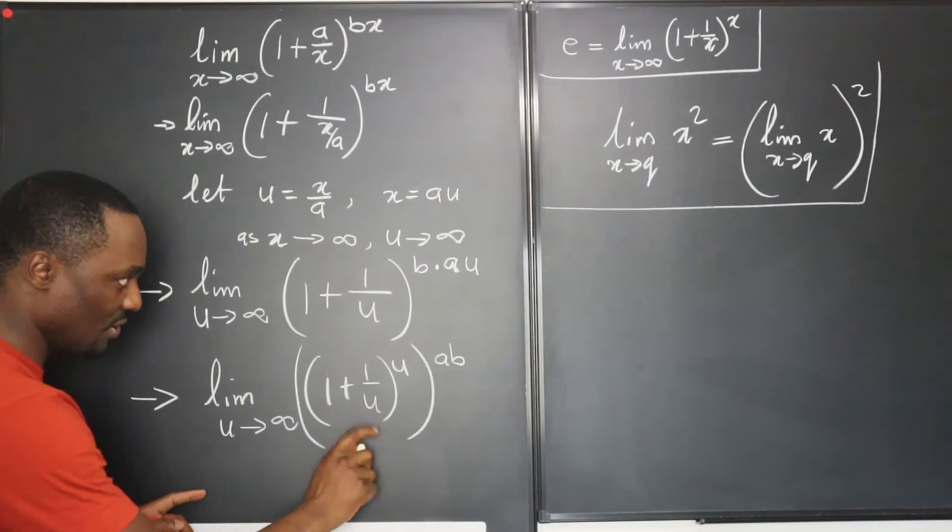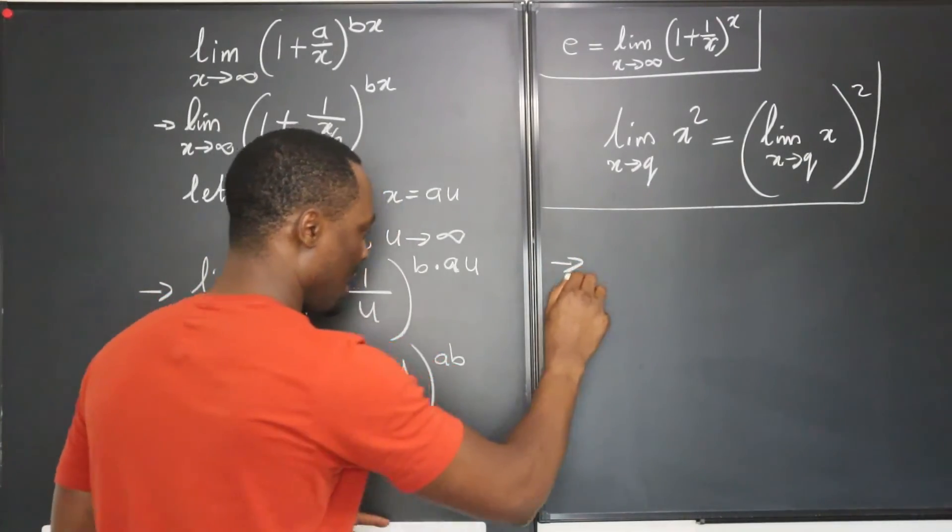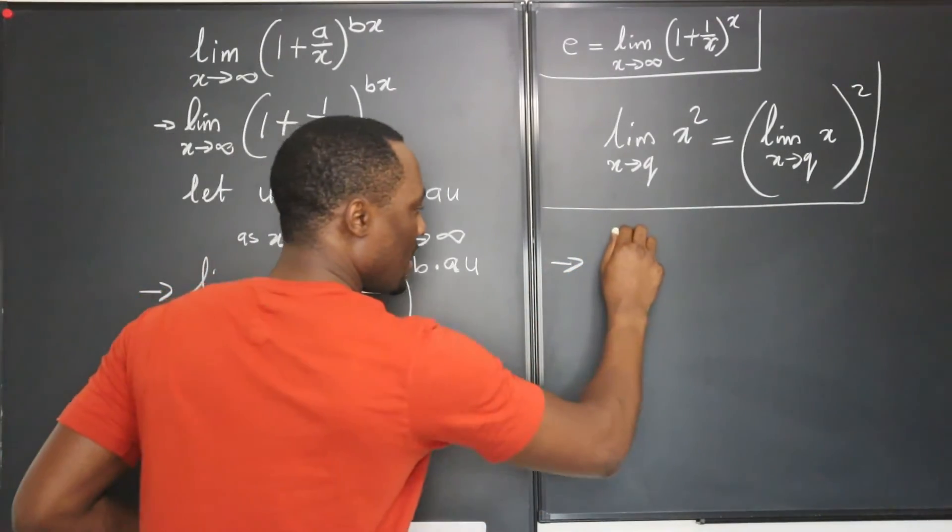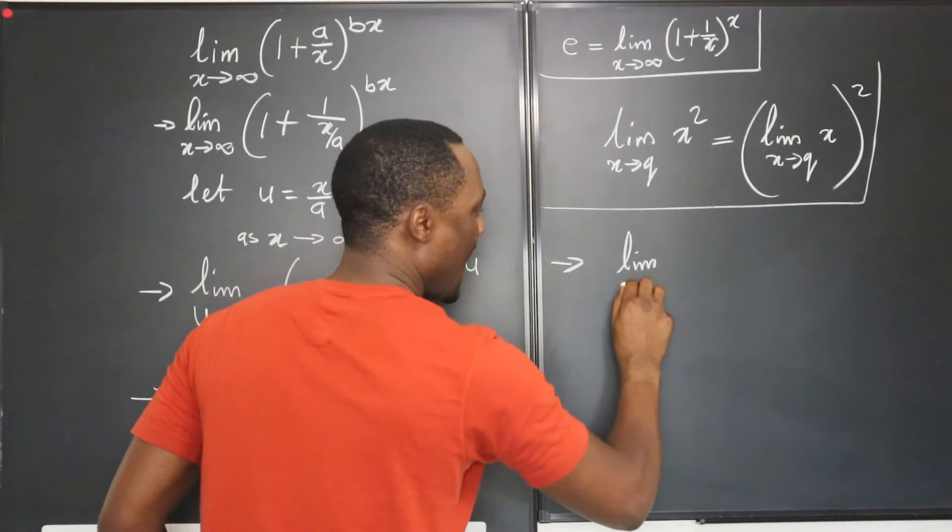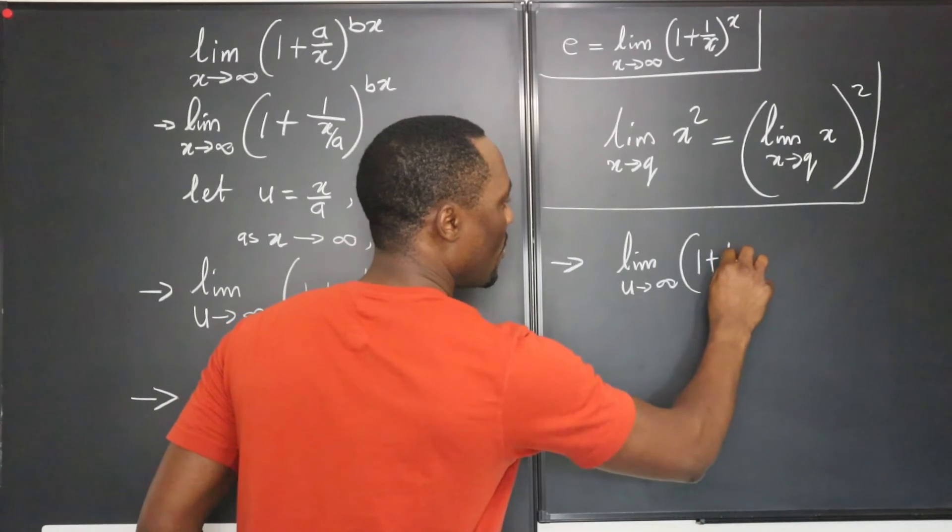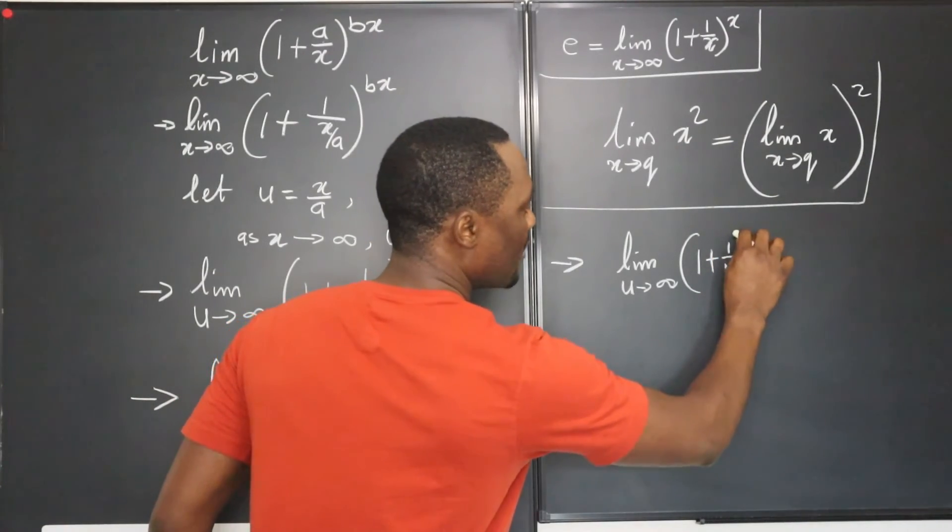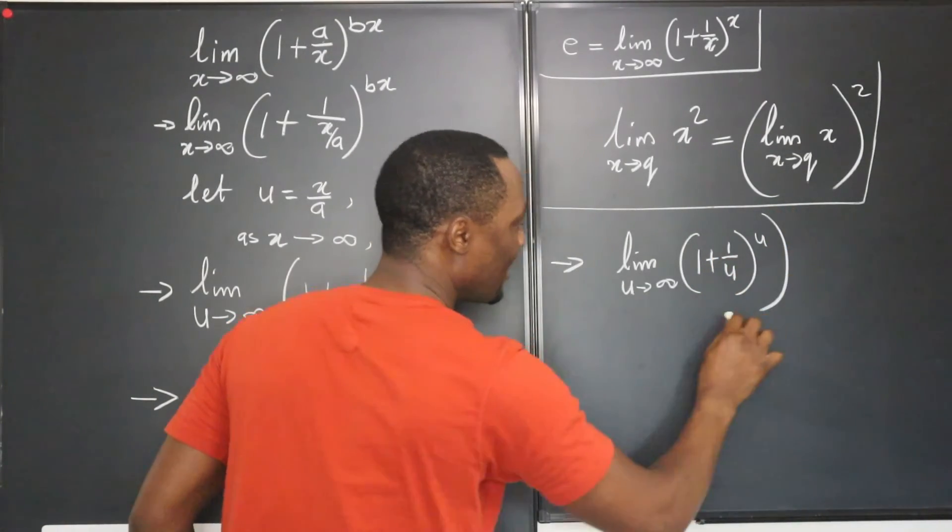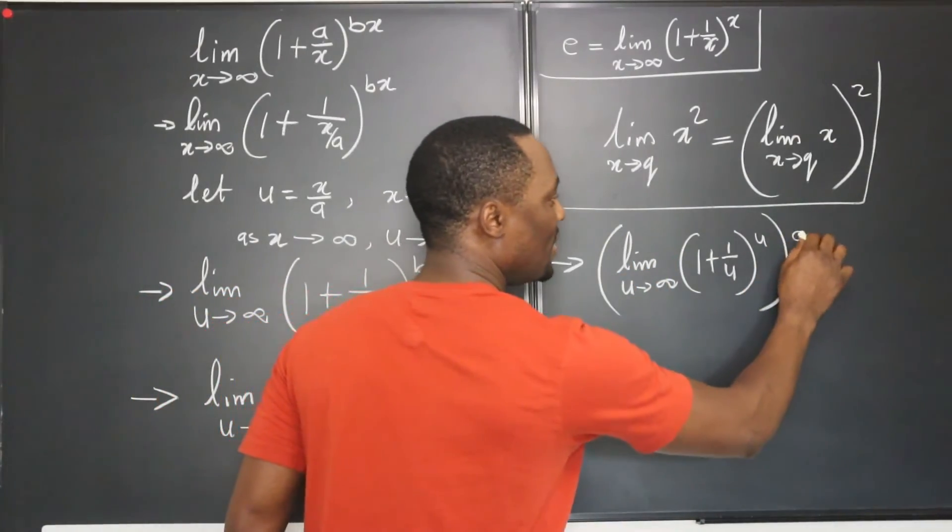So at this point I'm going to push in the limit function in here. So this leads us to the limit as u approaches infinity of 1 plus 1 over u raised to u. Then this entire expression is raised to ab.